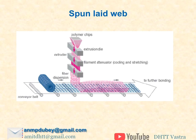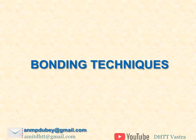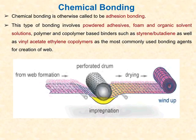In chemical bonding — also called addition bonding — chemicals are used to bond the web. This type of bonding involves powder adhesive, foam adhesive, organic solution, and polymer and co-polymer base binders such as styrene, betadine, and vinyl acetate. These chemicals are used in chemical bonding to bond the created layers together.